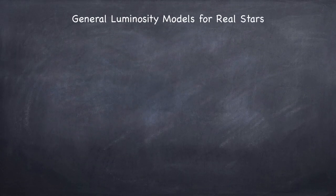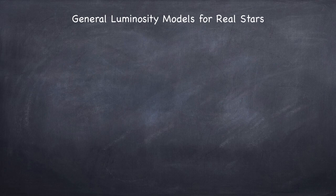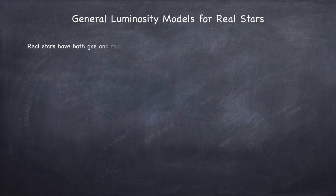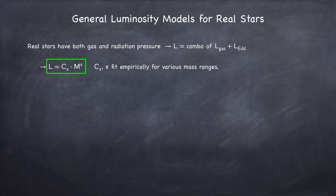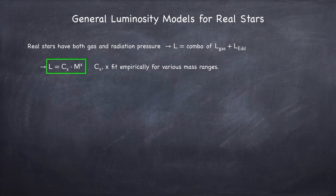Finally, let's take a look at real stars, as real stars are a combination of these two models since they have both gas pressure and radiation pressure. The way this is typically done is that the luminosity is modeled as some constant times the mass raised to some exponent. That constant will vary depending on which exponent you pick. And then what is done is that this model is fit with empirical evidence for various mass ranges.